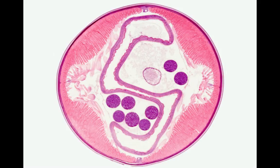Here we have a cross-section of a male Ascaris, greatly magnified, of course. We are going to identify the main structures. First, there is the cuticle, which is the outermost layer of the specimen. It is a proteinaceous structure, which is secreted by the next layer, the epidermis.